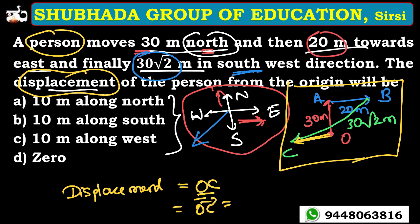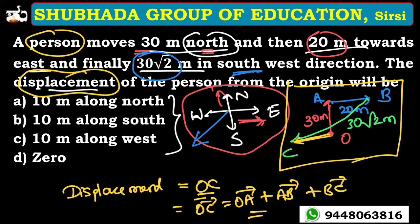Displacement is the vector sum of the individual distances traveled by the person, equal to vector OC. That must be equal to vector OA plus vector AB plus vector BC. Let's represent each of OA, AB, and BC as vectors.